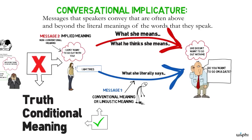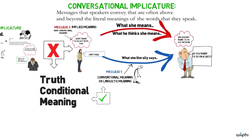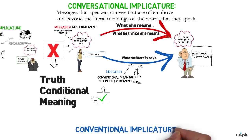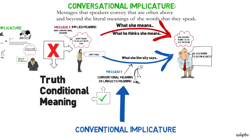This basic distinction takes us a long way toward understanding the kinds of meaning we find in everyday language. But there's one other dimension of meaning that's also very important: conventional implicature meaning. This kind of meaning seems to sit midway between the two kinds we've discussed — conventional implicature is conventional, it's part of the direct, literal meaning of the words in question, but at the same time it's not truth conditional.